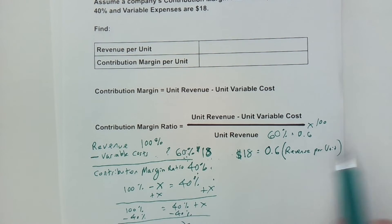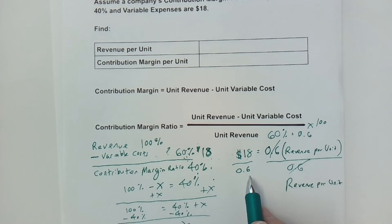So now we can do a little bit of algebra. I want to get the 0.6 out of there. It's multiplied, so I do the opposite. I divide by 0.6. If I do it to one side, I need to do that to the other side. These cancel out, so I've got my revenue per unit left over, and I've got the $18 divided by 0.6.